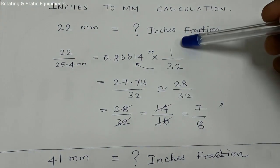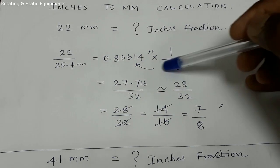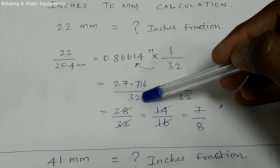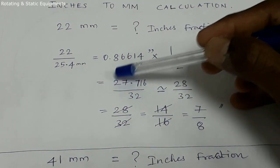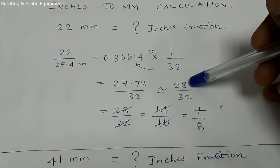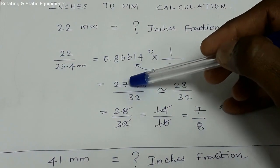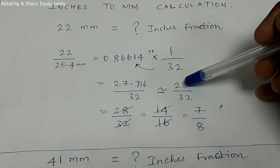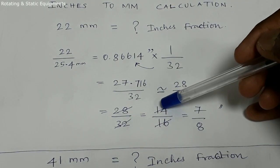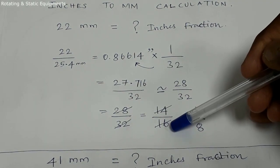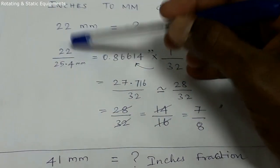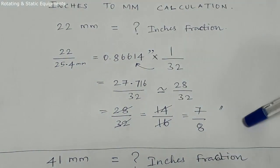Now multiply by 1 divided by 32. That gives 27.716 divided by 32, so the value is 27.7173828. This rounds to 27.716, and the new value answer is 27.716. So 22mm on the spanner is 7/8 inches.